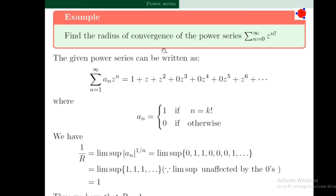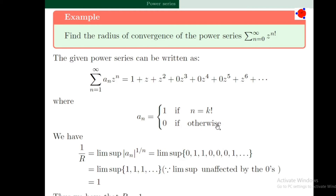Problem number 2: find the radius of convergence of the power series sigma n=0 to infinity z^(n!). Note that the given power series can be written as 1 + z + z² + 0·z³ + 0·z⁴ + etc. The coefficient a_n equals 1 if n = k! and 0 otherwise.